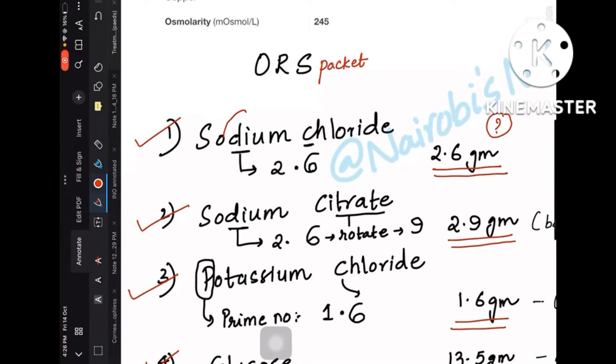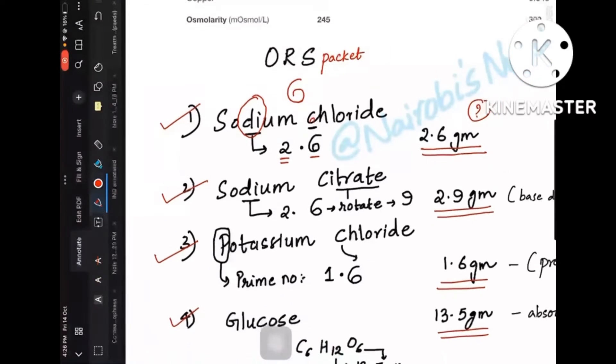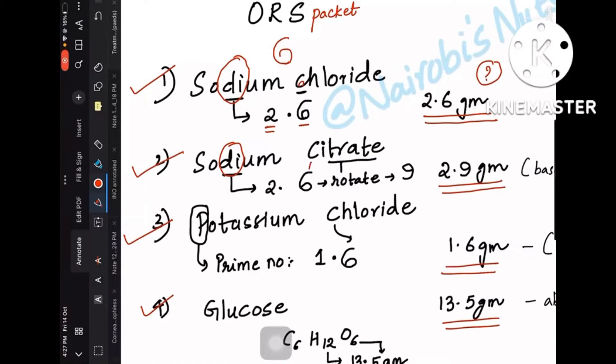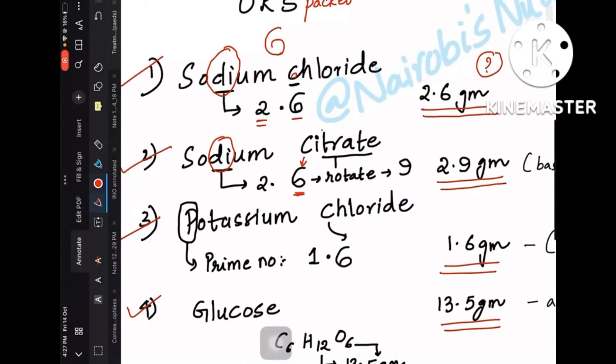Potassium chloride is 1.6 grams and glucose is 13.5 grams in that packet. You have to remember these values. Firstly, sodium has 'di' in it, so 'di' is 2, and you can make 6 from C, right? So 2.6 grams is sodium chloride. Coming to sodium citrate, 'di' again, so 2, and citrate is rotate—rotate 6, so 2.9 grams is sodium citrate.